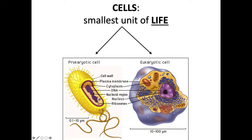One last question: an organism is multicellular, has a cell wall, but is non-photosynthetic. What kingdom would this organism be placed in? Fungi — that would include your mushrooms and mold. They have cell walls made of chitin, but they don't undergo photosynthesis, so they can't produce their own food. Remember, they are decomposers. Mold and mushrooms are decomposers.